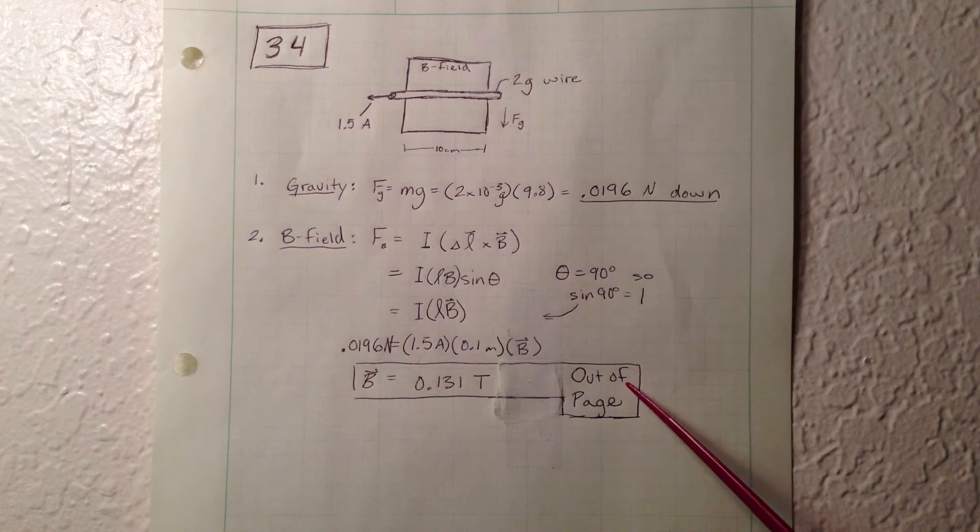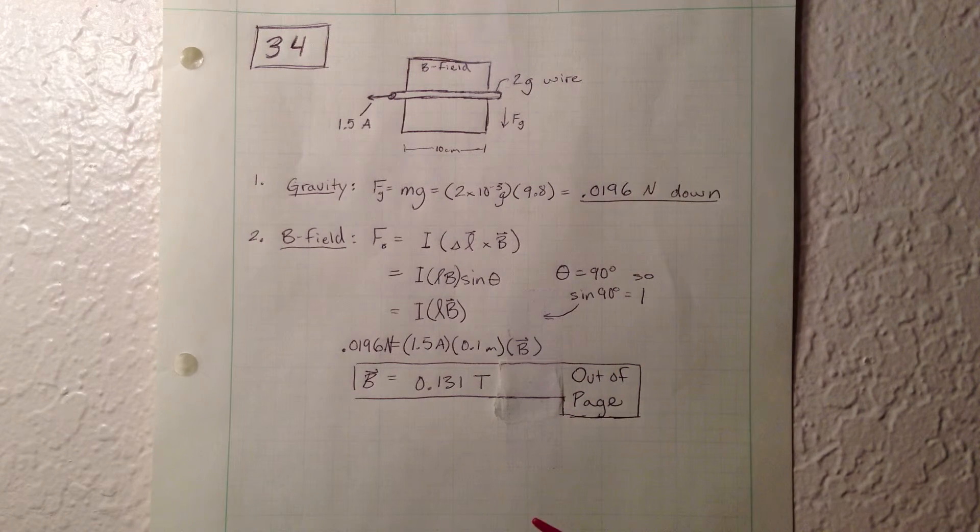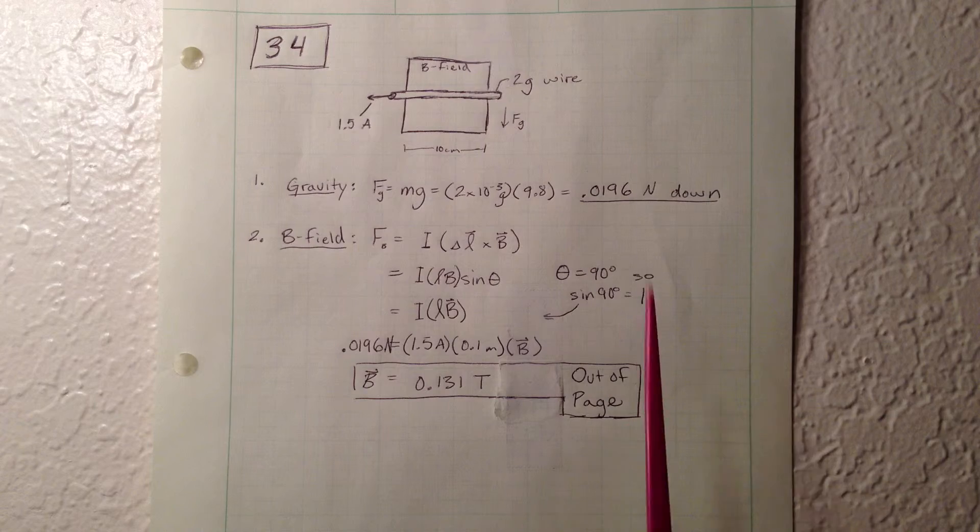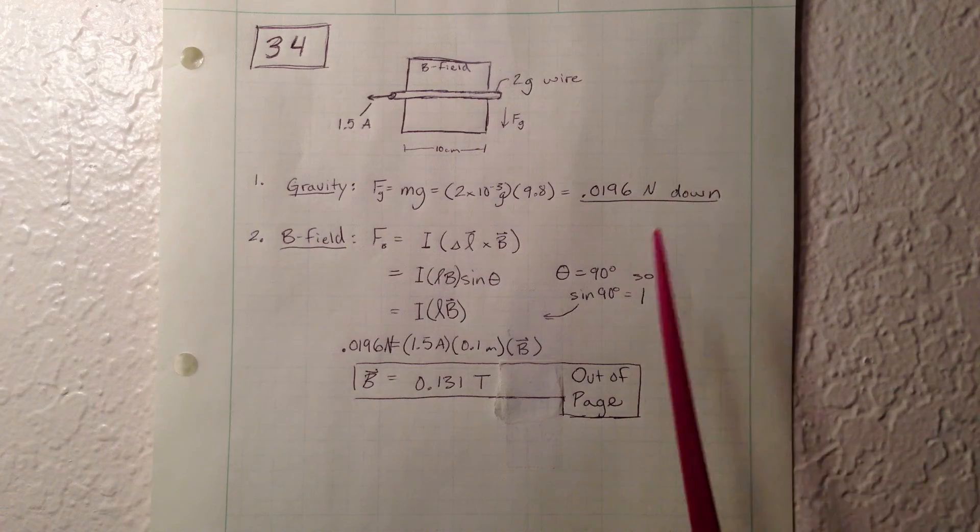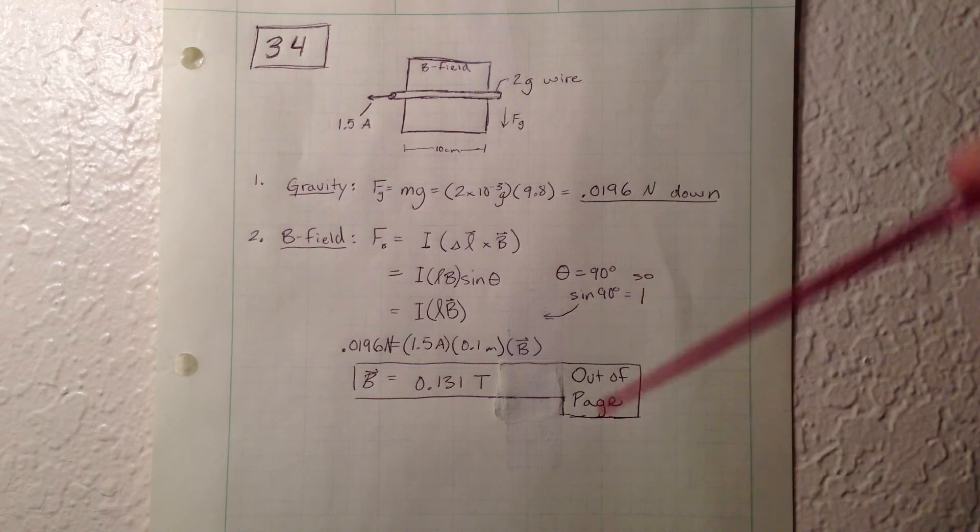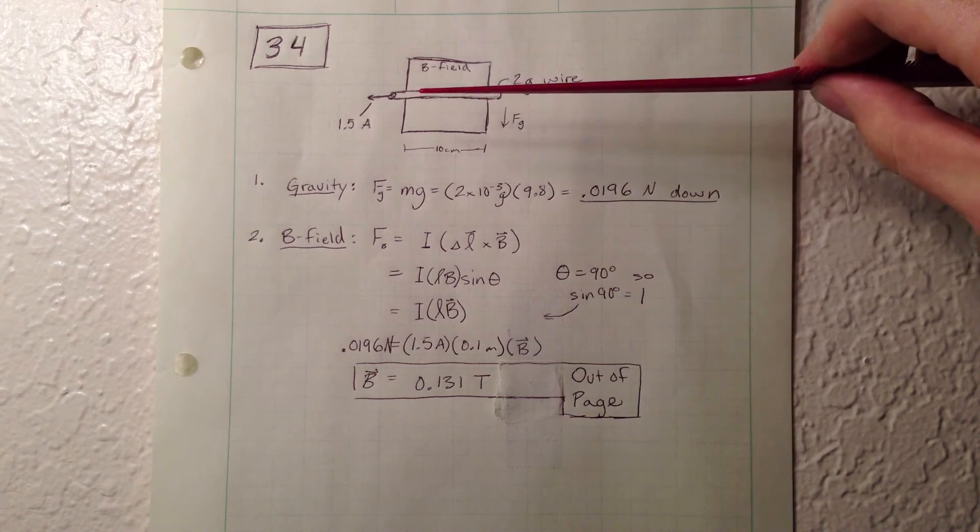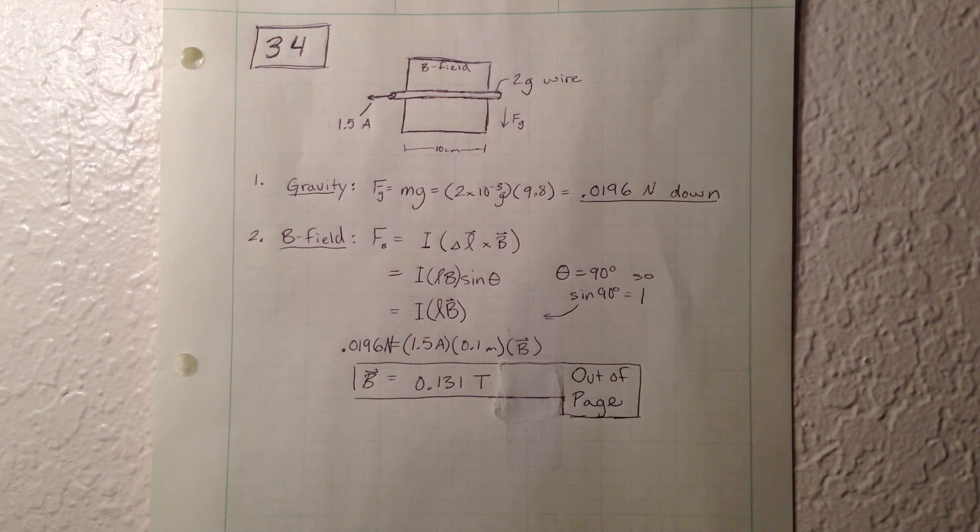And we found that it's out of the page. So that's the B field that will generate a force in the upward direction that has the same magnitude as the gravity, which is in the down direction, causing the wire to levitate. And it's really as simple as that.